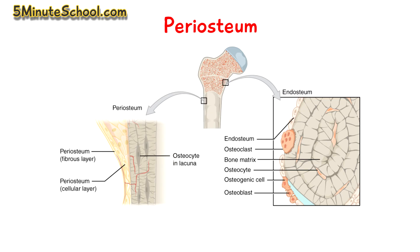Studies show that cells of the periosteum contribute to this callus formation, and that's likely due to the activation of those progenitor cells which are present in the osteogenic layer.